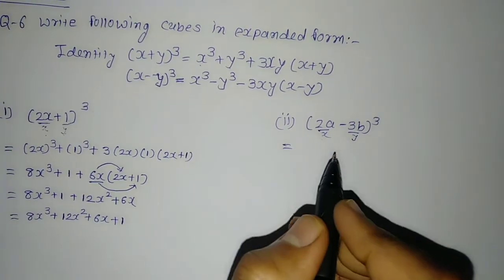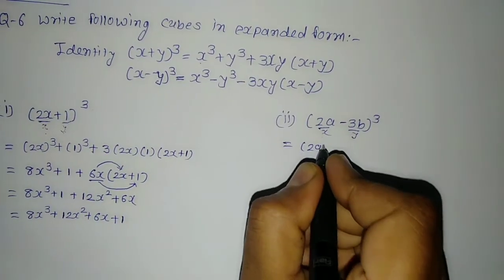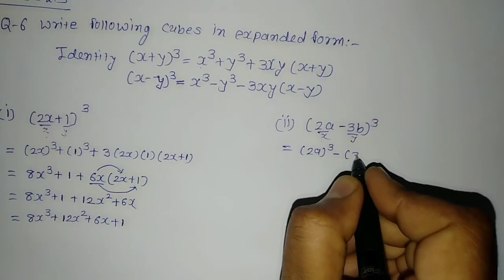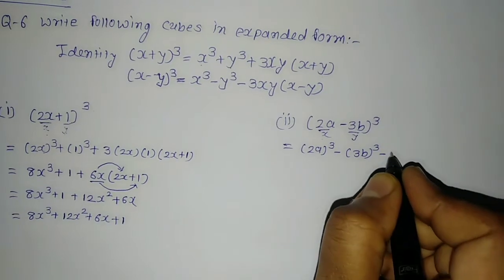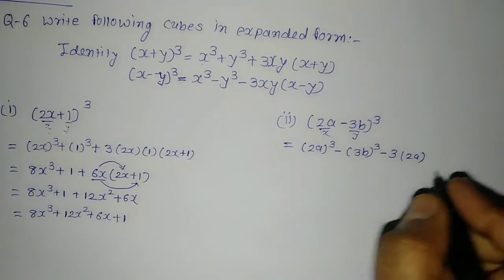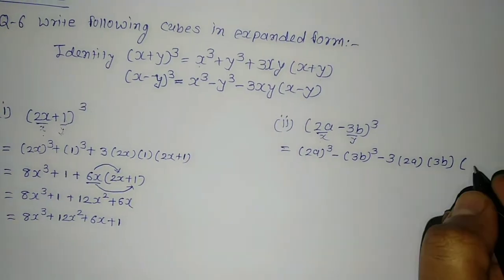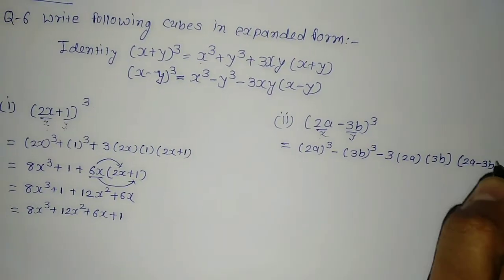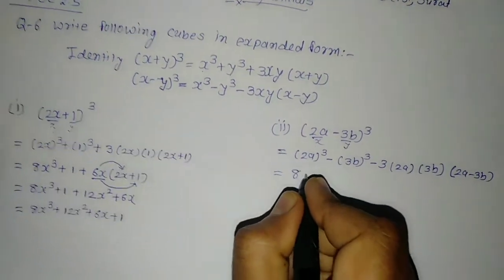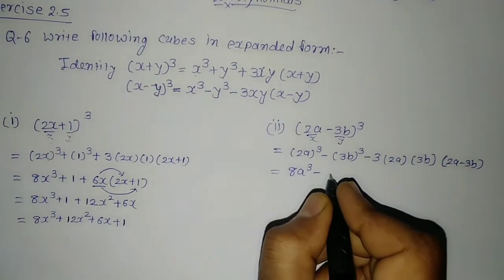So (2a − 3b) whole cube: as per the formula, the first term 2a is x, so we write (2a) whole cube. With the minus sign, y cube is (3b) whole cube, giving minus (3b) cube. Then minus 3 times x times y: x is 2a and y is 3b, into bracket (2a − 3b). Now, 2 cube is 8, so we get 8a cube. And 3 cube is 27, so it is 8a cube minus 27b cube.